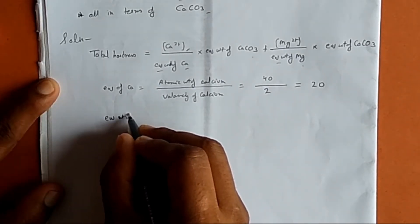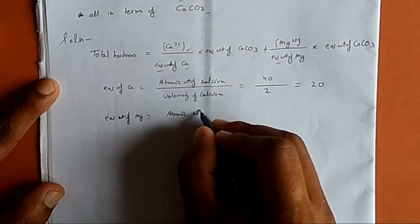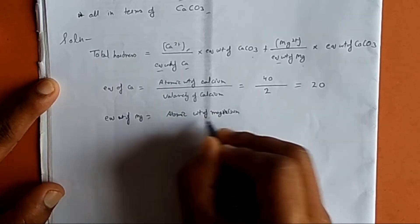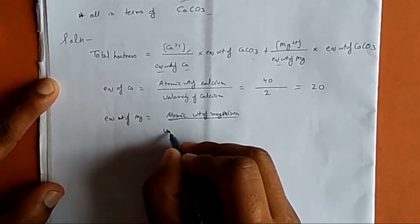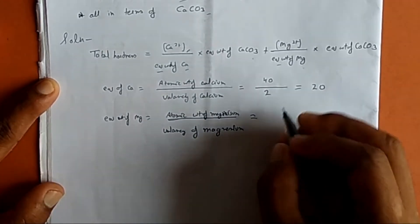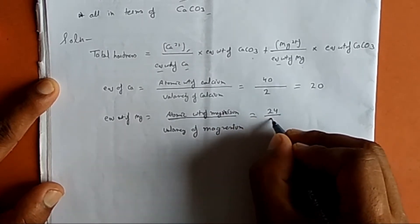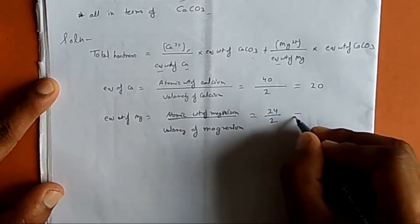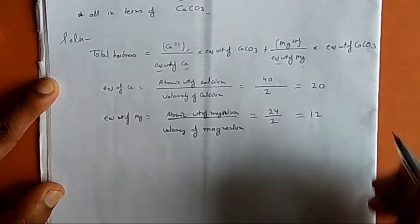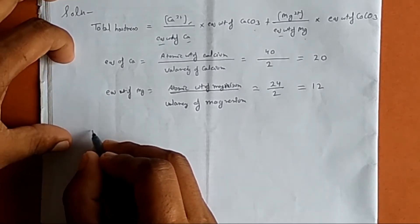The equivalent weight of magnesium equals the atomic weight of magnesium divided by the valency of magnesium. The atomic weight of magnesium is 24 and valency is 2, so the equivalent weight of magnesium is 12.